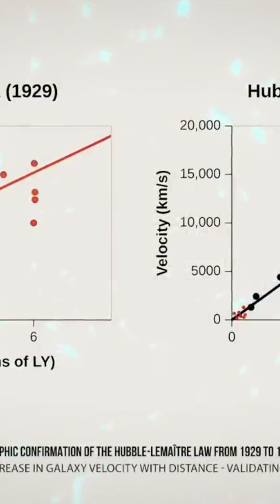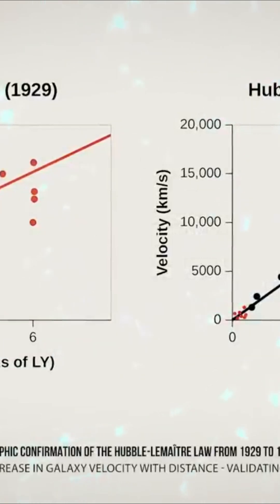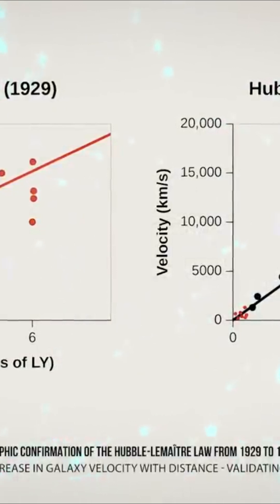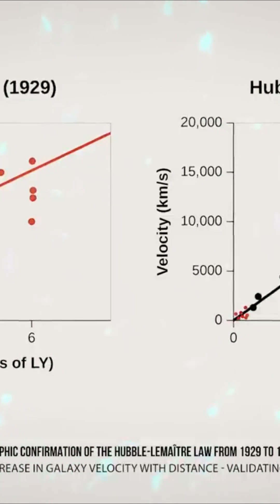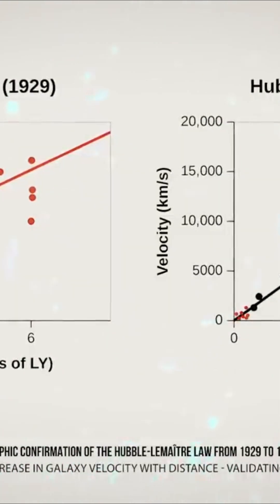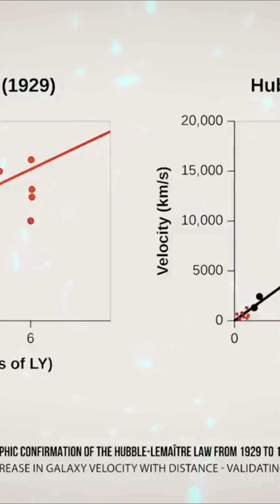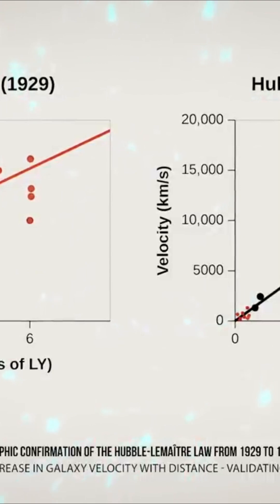In 1929, the Hubble-Lemaître Law, predicted two years earlier by Lemaître, demonstrated that our universe is in continuous expansion, and what's more, at an insane speed.